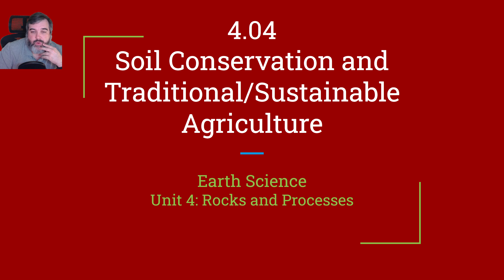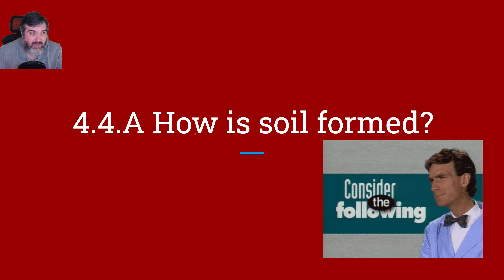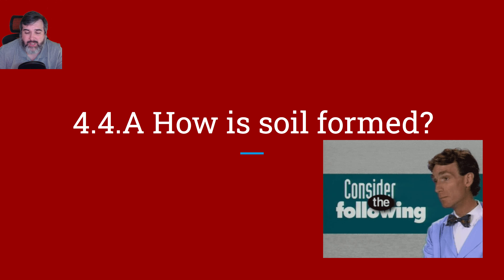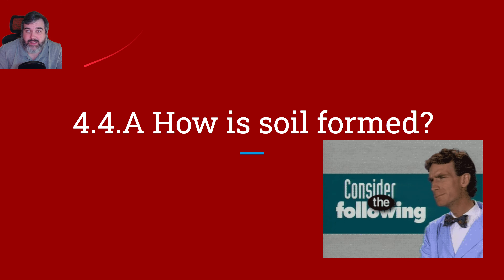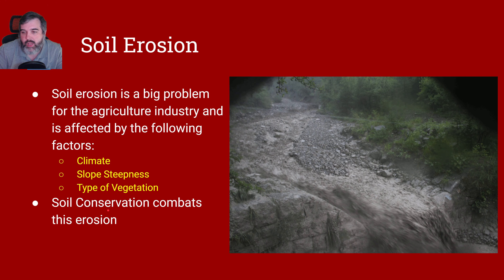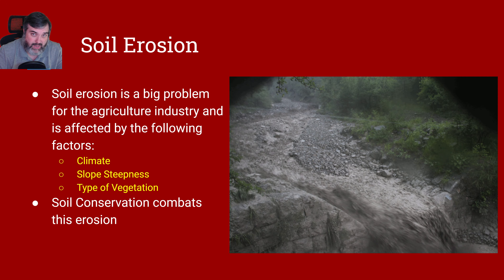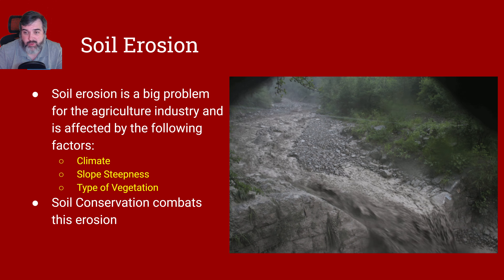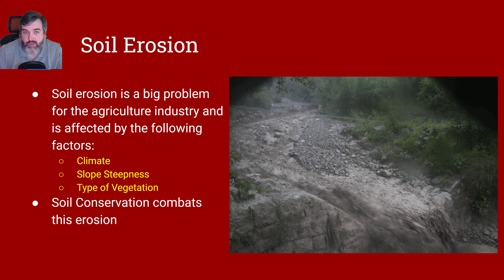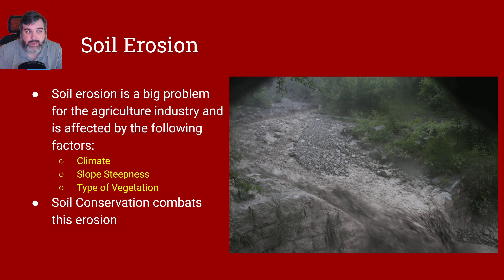That's Section 4.03. Let's move on to 4.04 — Soil Conservation and Traditional Sustainable Agriculture. The objective is to describe methods of soil conservation in order to explain their effectiveness. Soil erosion is a big problem due to climate, slope steepness, and types of vegetation. As I record this, Hurricane Helene came through just a week ago and devastated the mountains of North Carolina — even Interstate 40 has caved in — and this is because of erosion and landslides.